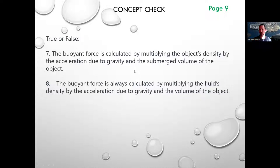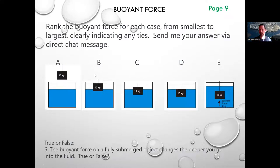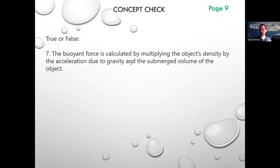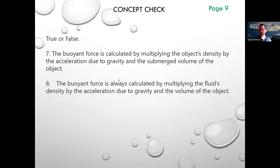It's the fluid's density, because the fluid's density times the volume of fluid displaced. That's the mass, and then you multiply that by the acceleration due to gravity, and then you get the weight. So seven was false. Number eight, the buoyant force is always calculated by multiplying the fluid's density by the acceleration due to gravity and the volume of the object. False. Got the density part right. Acceleration due to gravity is right, but it's not always the volume of the object, because it could be that only part of the object is displacing fluid.